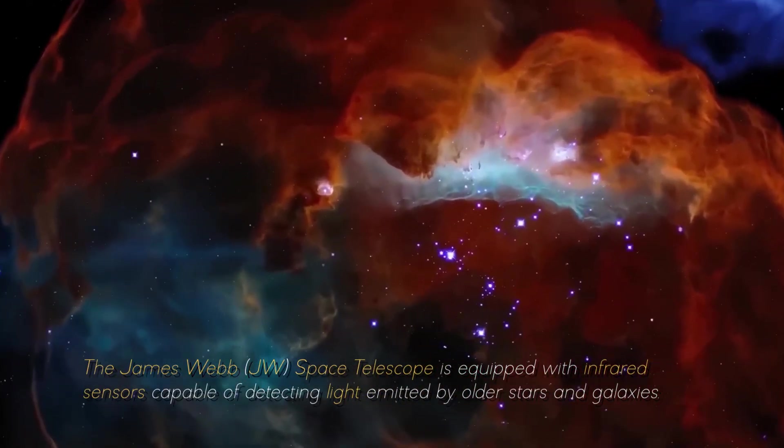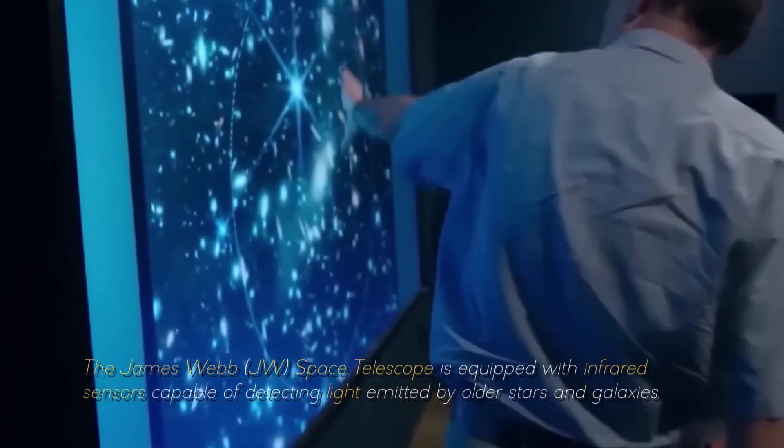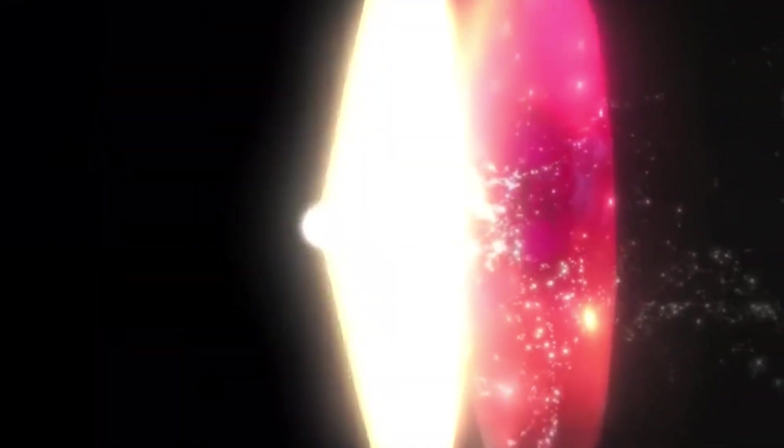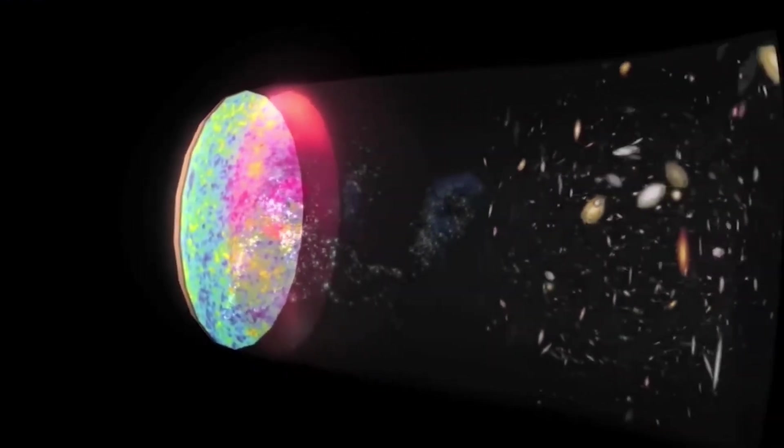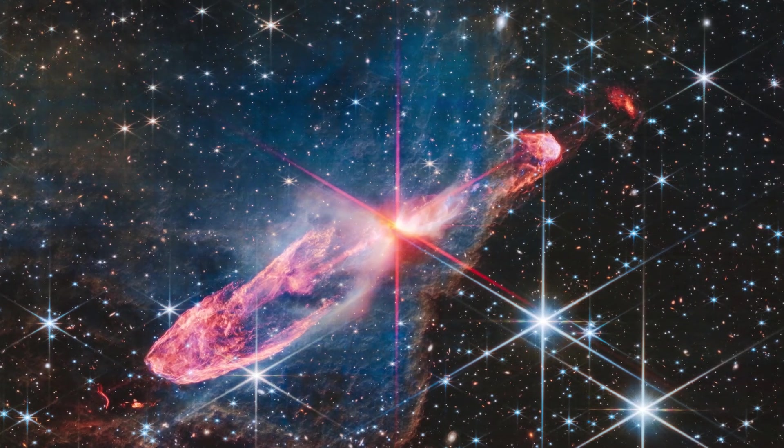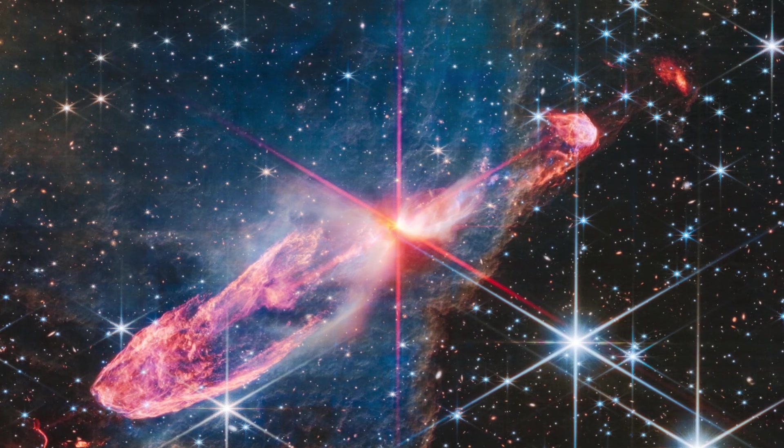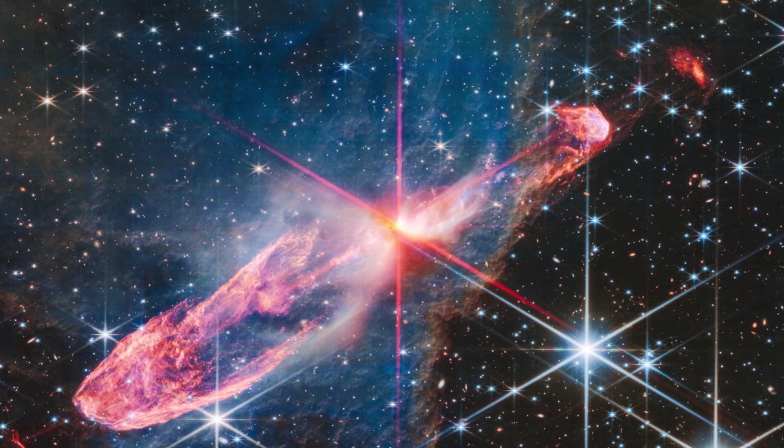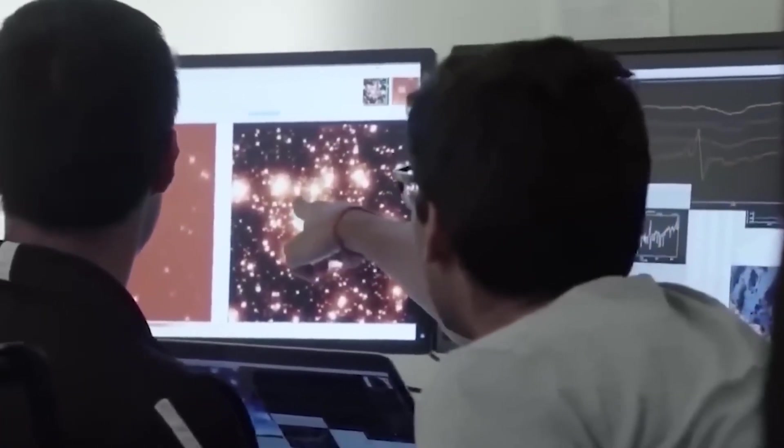The James Webb Space Telescope is equipped with infrared sensors capable of detecting light emitted by older stars and galaxies. This allows astronomers to go back in time, almost 13.5 billion years, to the beginning of the known universe. Prior to this discovery, scientists had detected numerous galaxies in the oldest regions of the universe approximately 350 million years after the Big Bang using data collected by the JWST. These distant stellar systems were small and in agreement with the predictions of current cosmological models.